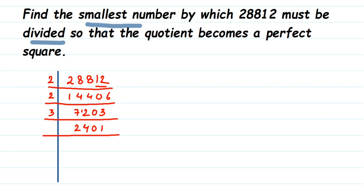The next number is odd but doesn't go in the 3 times table — because 24 goes but the next one doesn't. So the next prime number is 5, but this number doesn't go in the 5 times table either. So the next prime number to try is 7.